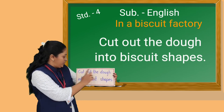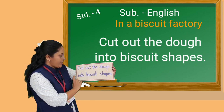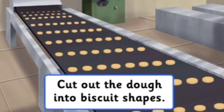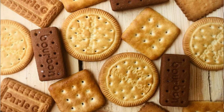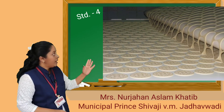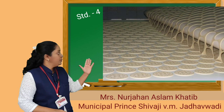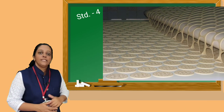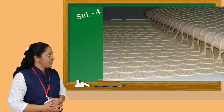After that, the next step is: Cut out the dough into biscuit shapes. In this step, after flattening the dough, we have to cut the dough in a biscuit shape. We see different types of biscuit shapes — some are rectangle, circle, square, heart shape, etc. And in factories, there are big machines. Look at this picture — there is a big machine which cuts the dough into a biscuit shape.